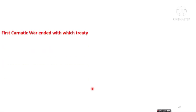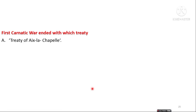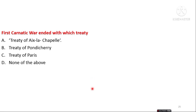The next question is: the First Carnatic War ended with which treaty? The options are Treaty of Aix-la-Chapelle, Treaty of Pondicherry, Treaty of Paris, and none of that. The answer is option A — the Treaty of Aix-la-Chapelle ended the First Carnatic War.